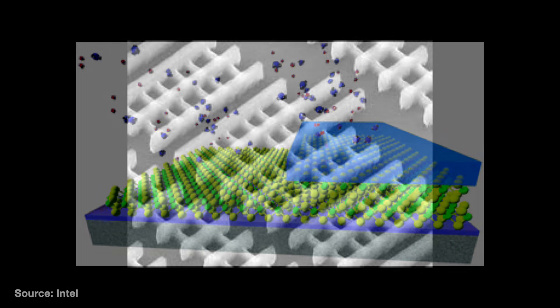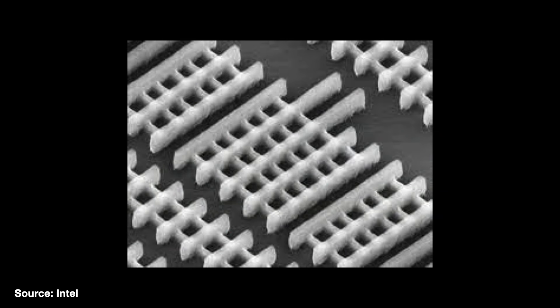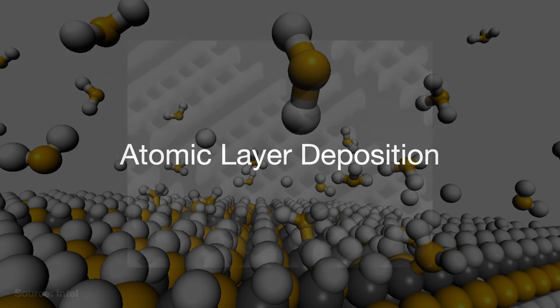But as transistor sizes have shrank, those thin layers have shrank too — to the point where we now have to deposit these new layers atom by atom. Atomic layer deposition.